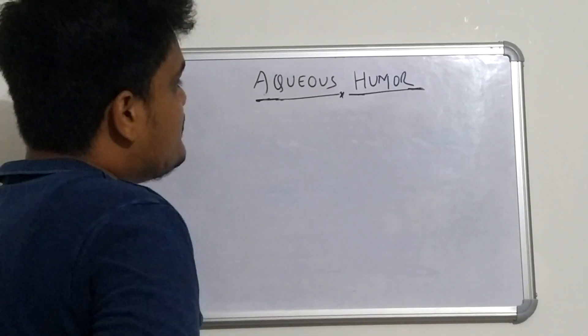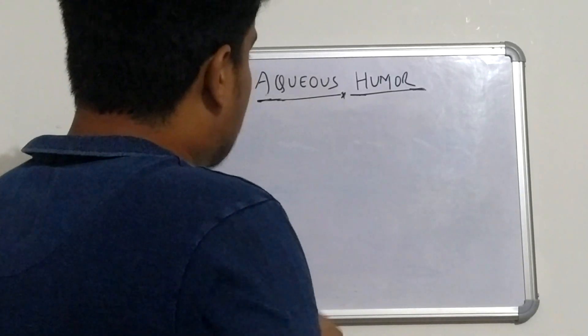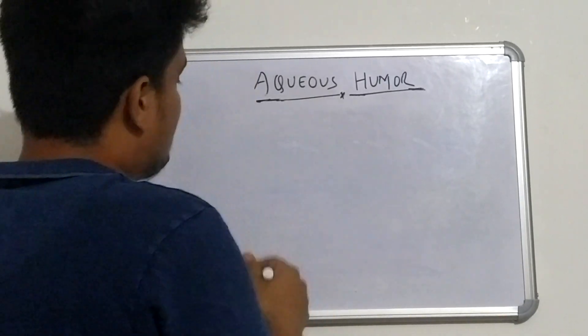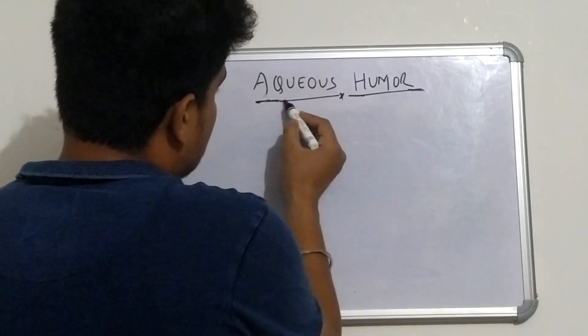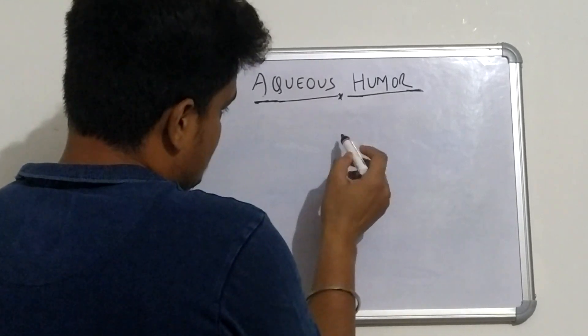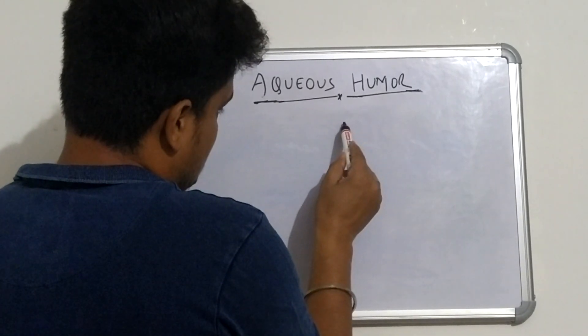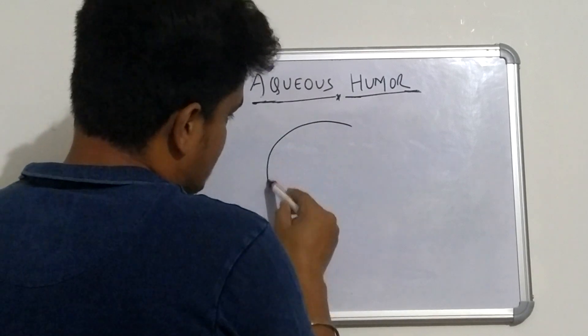Today we are going to discuss the fluid mechanics of the eyeball, especially the aqueous humor. Let me make a diagram.